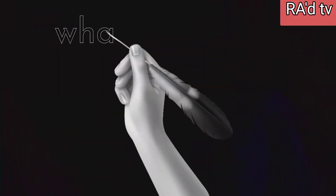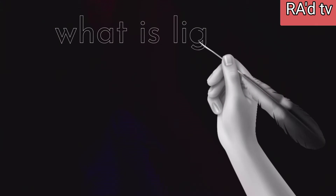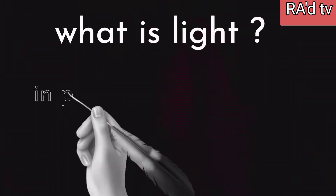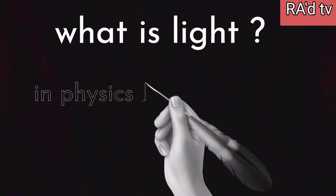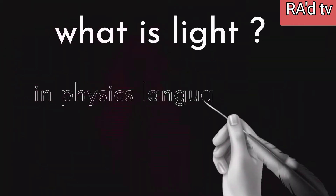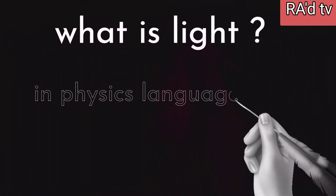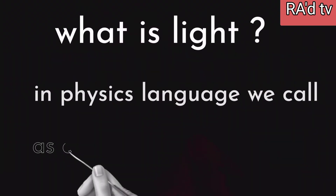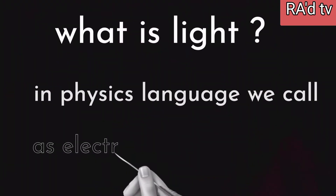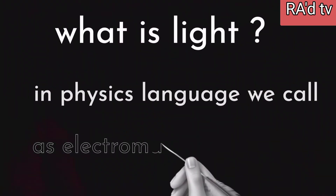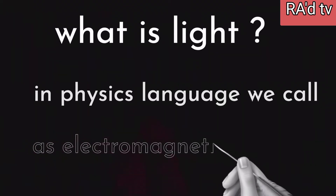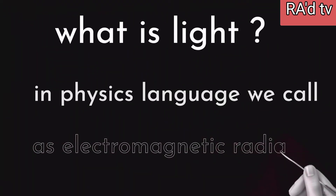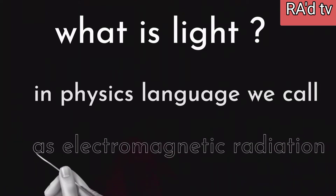What is light? Light is an energy. In physics language we call light as electromagnetic radiation — the combination of electric and magnetic radiation. Light travels in the form of waves.